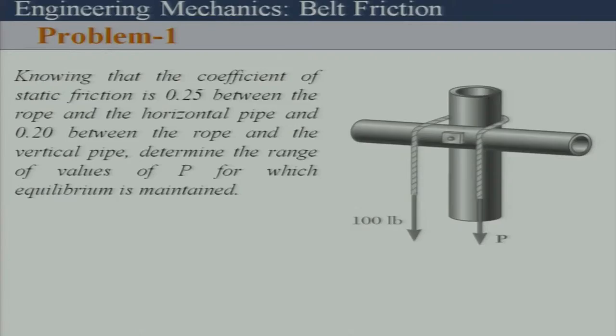The contact angles are straightforward: the horizontal contact angle is π/2 and the vertical pipe contact angle is π. Make sure the tension changes as the rope crosses each pipe — there is a change in tension immediately after crossing the horizontal pipe, and again when it rounds the vertical pipe and comes back.